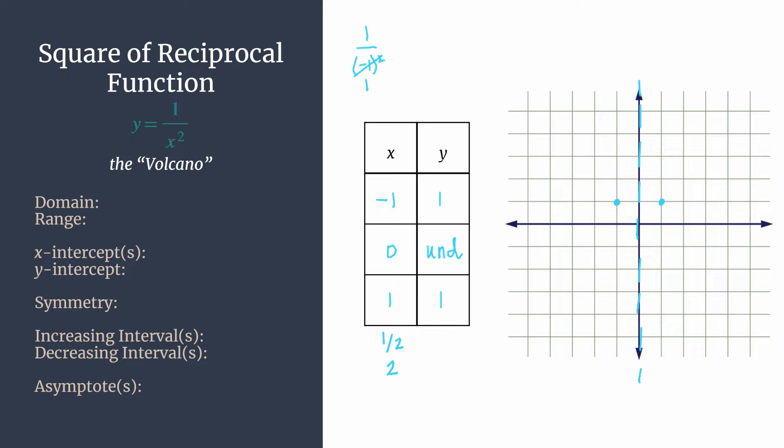Okay, so if we substitute in one half, we have one over one half squared. So our denominator, when we square both of those, we end up with one over four. And then we have one divided by one fourth, which is four. When we substitute in two, we have one over two squared, or one fourth. So let's plot these and see what's going on.